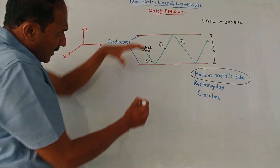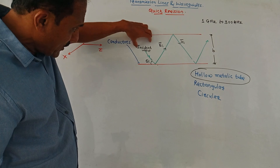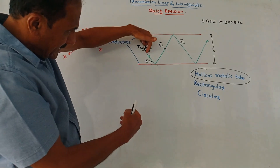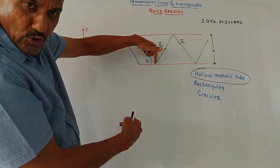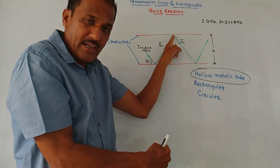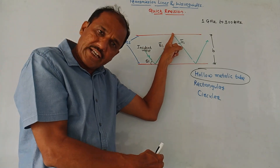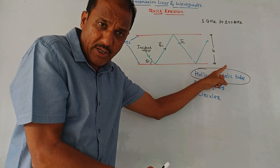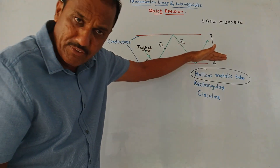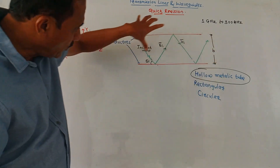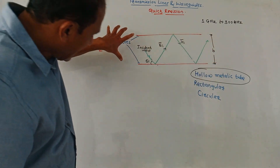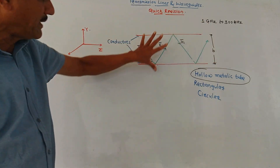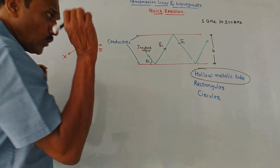This is the incident wave. The incident wave strikes on one of the boundaries — these are the two plates. The incident wave strikes on one boundary, gets reflected, again strikes the upper boundary, again gets reflected, and so on. Due to this back and forth reflection, microwave signals get transmitted through this structure.